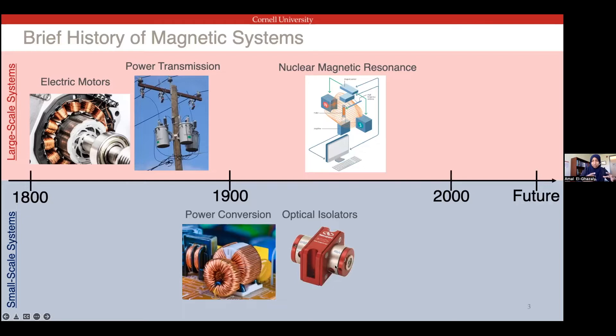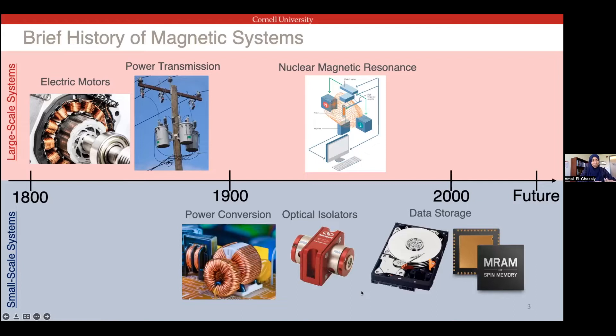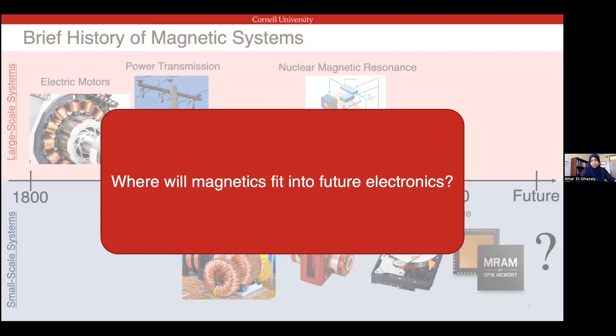They were also used in optical isolators, but as very large bulky isolators. More recently, we've been seeing nanoscale magnets in data storage, in magnetic random access memory, and the introduction of spintronics being used to control magnetic memory, as well as magnetoresistance used to detect the magnetic state — so electrical integration of magnetics, which has been the crucial key point of how we integrate magnets into our electronic systems. Naturally, the next question is where do we go from here, and part of my work is my vision for where magnetics will fit into future electronics, specifically for haptic displays.